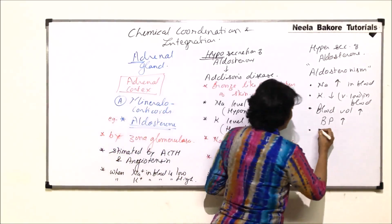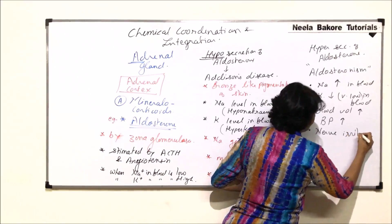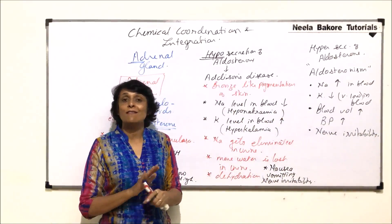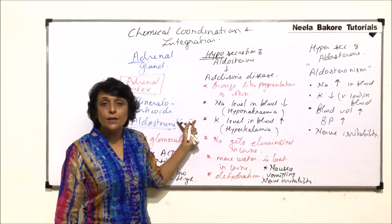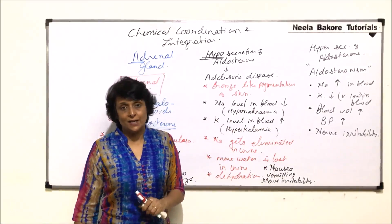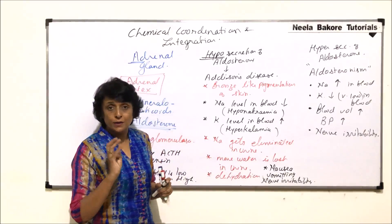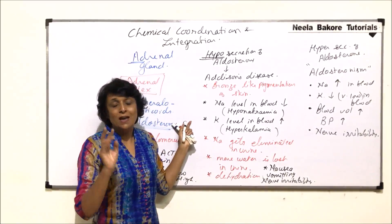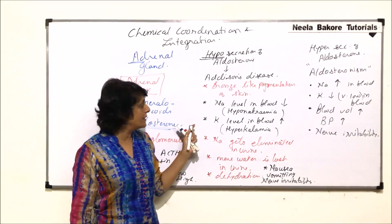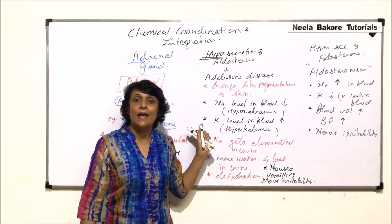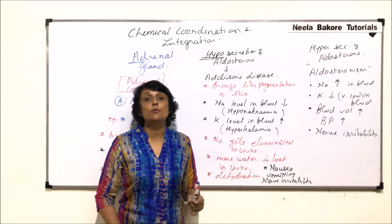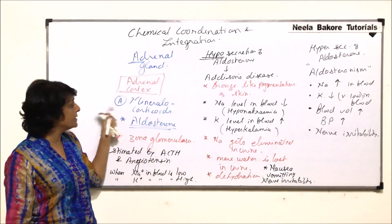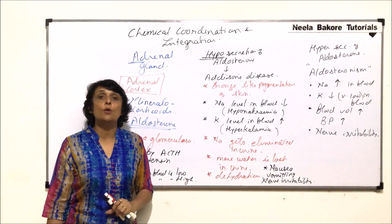Sodium ions are essential for nerve impulse conduction, but if sodium is more than normal it results in nerve irritability. So aldosterone's function is to maintain sodium and potassium levels in the blood; in hypo and hyper conditions this imbalance affects nerve impulse conduction and urine output. Aldosterone helps in retention of ions and absorption of water from the nephric filtrate. This concludes mineralocorticoids; next we take up glucocorticoids.